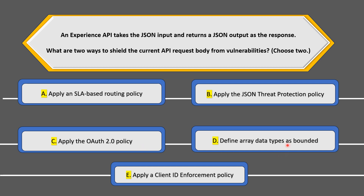Option D is define array data types as bounded. This also seems to be a strong candidate for the answer. When array data types are unbounded, their length could be infinite, giving perpetrators the chance to send malformed requests that corrupt your API or backend systems. If you define your data types as bounded, that restricts the size and sets a maximum threshold on your arrays, making this a strong candidate.